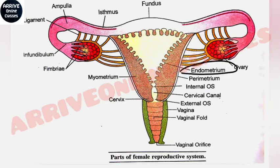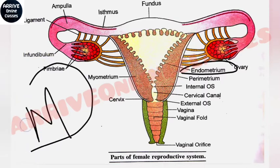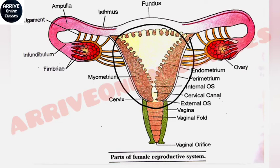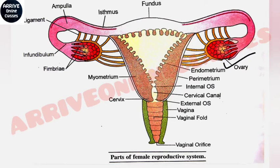The endometrium wall is the wall that is shed off during the menstrual cycle. The uterus has three main layers: endometrium, perimetrium, and myometrium.